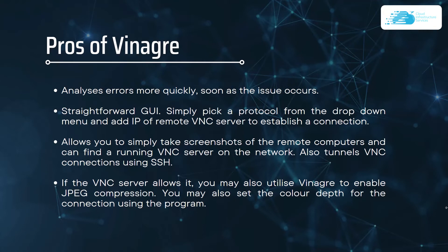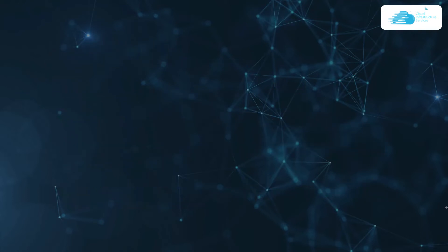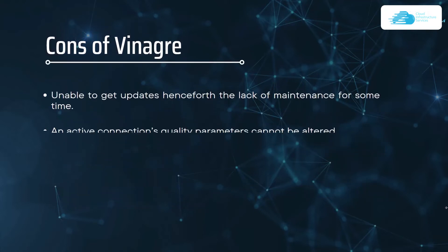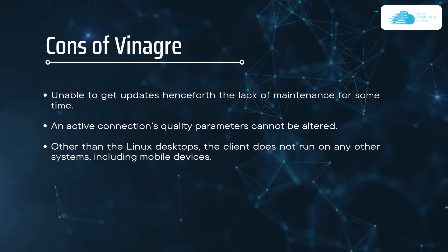You may also use Vinagre to enable JPEG compression and set the color depth for the connection. The cons of Vinagre include that it is unable to receive updates due to a lack of maintenance. Active connection quality parameters cannot be altered within Vinagre, and the client does not run on any other system besides Linux desktops, including mobile devices.